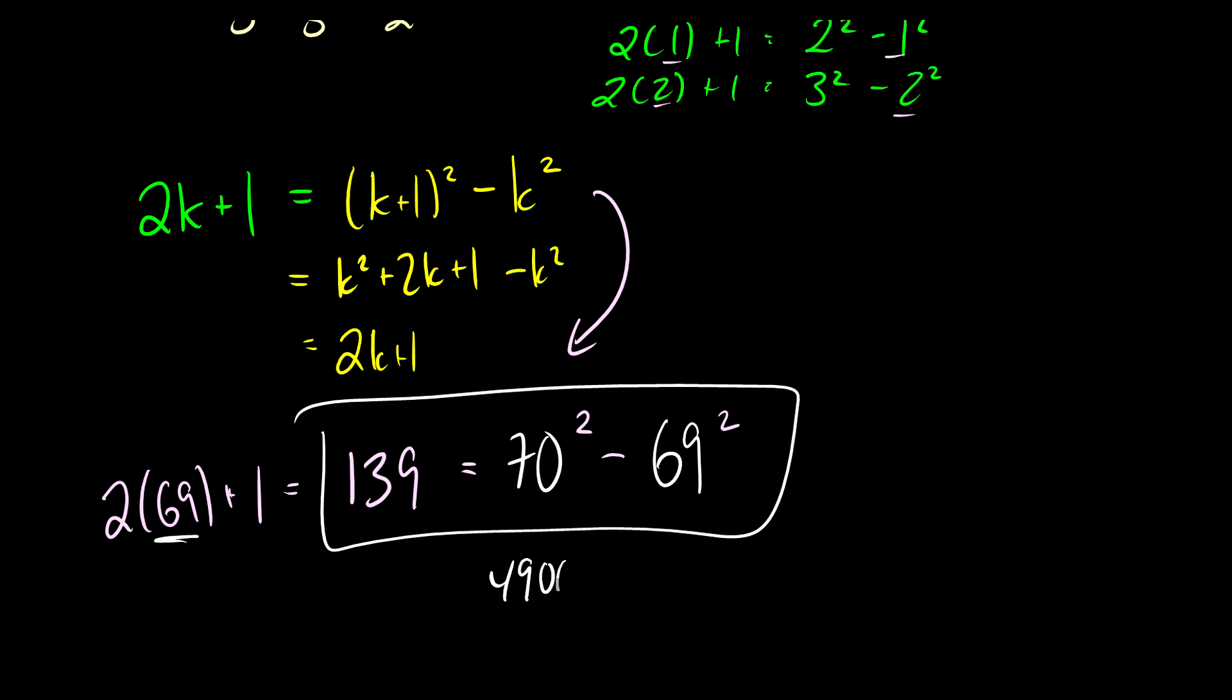So this is going to be 4900, and that's going to be subtracting 4761. That is 69 squared, I believe. So that should equal 139.